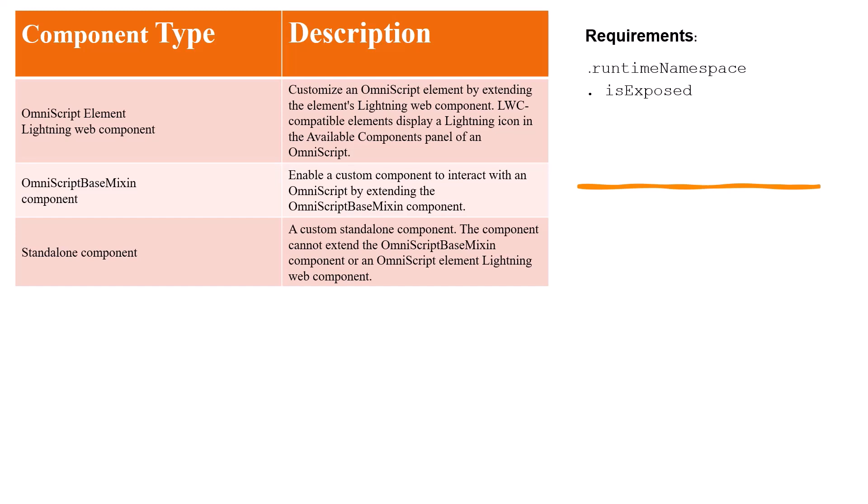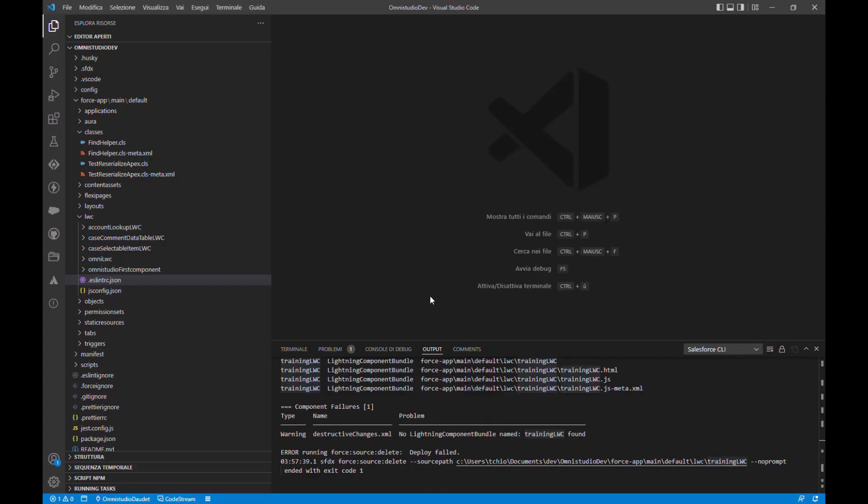This is a simple lightning web component. To use a lightning web component in OmniScript, two parameters are required in the XML file: the runtime namespace and isExposed.